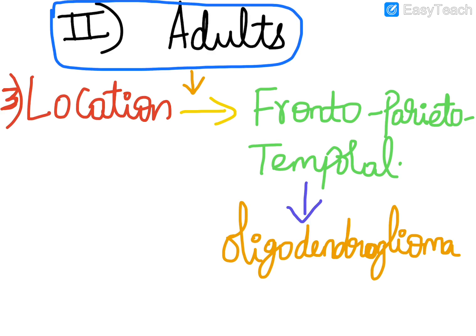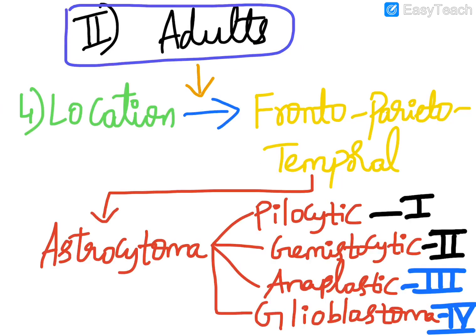The third location in the adult age group is the frontoparietal region, where we see oligodendroglioma and astrocytoma. Astrocytoma has four grades: pilocytic astrocytoma (grade 1, benign), diffuse or gemistocytic astrocytoma (grade 2), anaplastic astrocytoma (grade 3), and glioblastoma (grade 4).